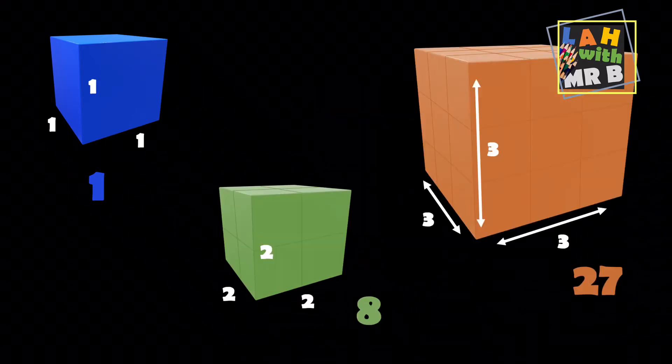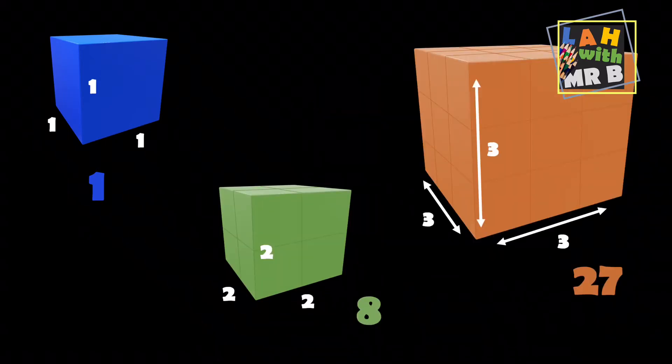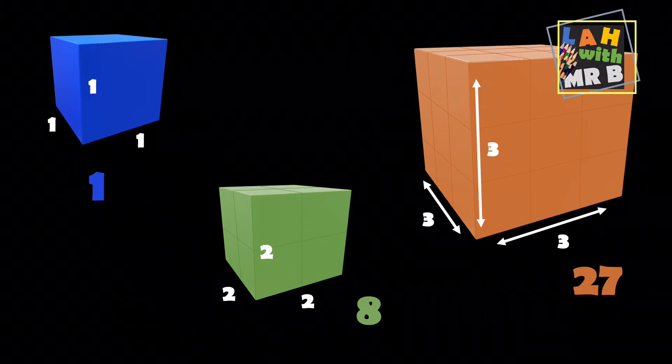Let's look at another example. This time, we're going to make a cube with threes. So three up, three across, three deep. Again, if we were to break this up, we'd find that we need 27 cubes in order to make this shape.